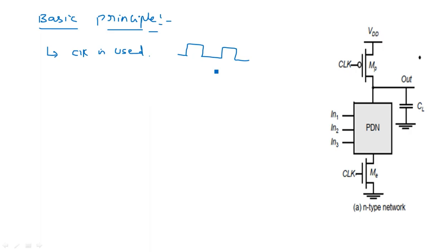Both transistors are applied with the clock signal, so one is ON and the other is OFF depending upon the state of the clock signal. There are two operations of this circuit: one is pre-charge and the other is evaluate.